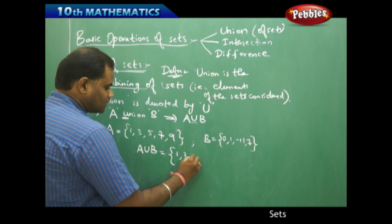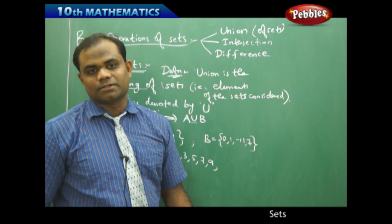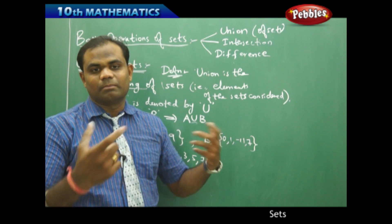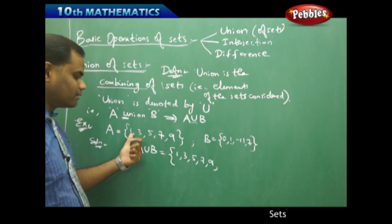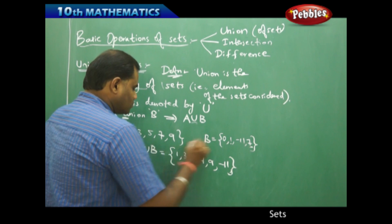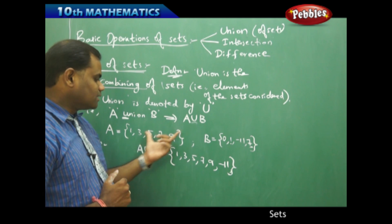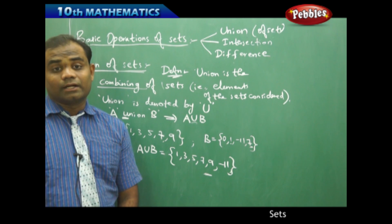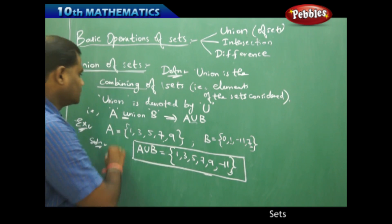To find A ∪ B, I write all the elements of set A: 1, 3, 5, 7, 9 — and then I write all the elements of set B. If an element is repeated, I write it only once. Just as a student in both sections is counted only once in the combined class, when two elements appear in both sets they are written as one common element. So 1 is already written, I don't write it again. Then -11 is added. Similarly 7 is repeated, so I do not write it again. Therefore the union A ∪ B = {1, 3, 5, 7, 9, -11}.